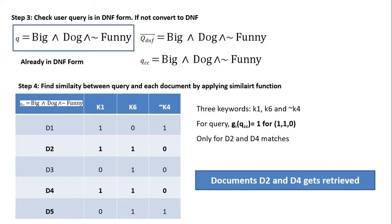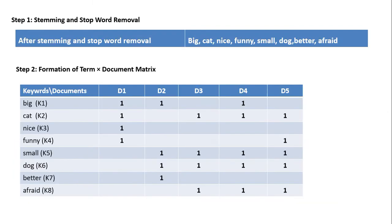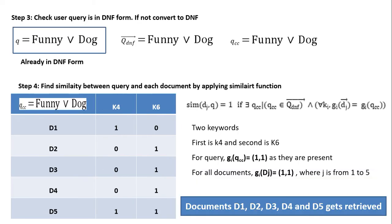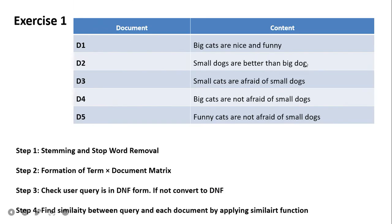We check five documents for k1, k6, and NOT k4. When k4 is present in a document we mark 1, and when it is absent we mark 0. The query pattern is (1,1,0). Checking all documents, we find this pattern matches only d2 and d4. In d2 and d4, 'big' is present, 'dog' is present, and 'funny' is absent. So documents d2 and d4 are retrieved, which we can verify against the original documents.